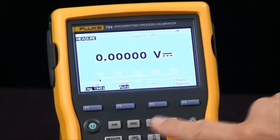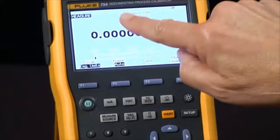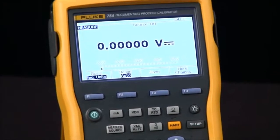There are three screens: measure, source, and the split screen that has measure and source. So we're in the correct screen to measure an RTD.